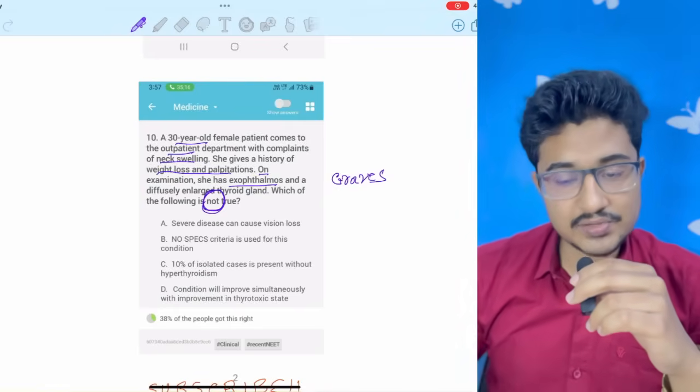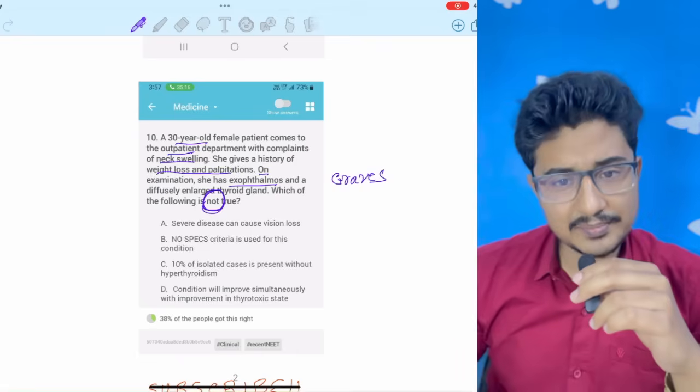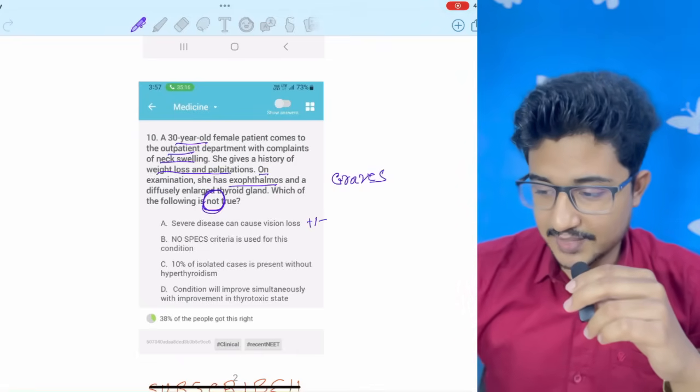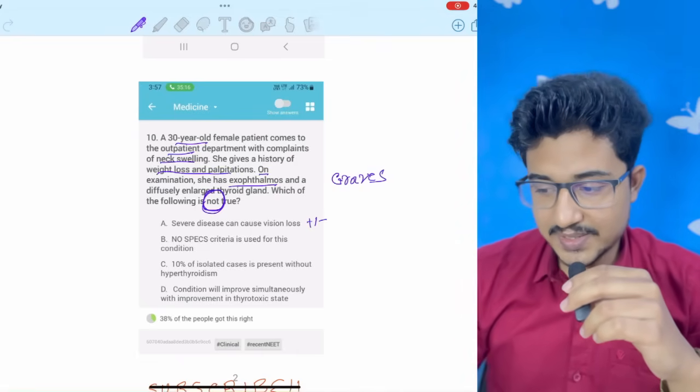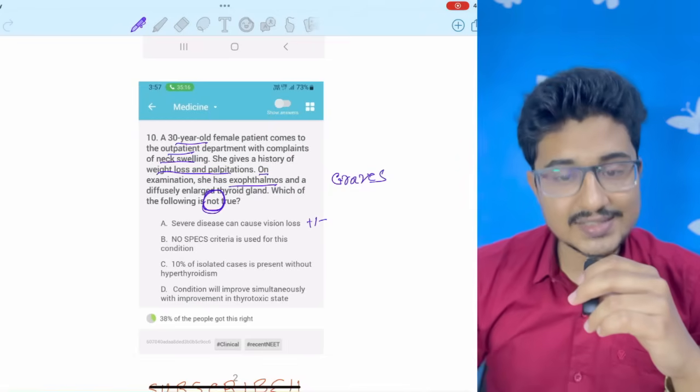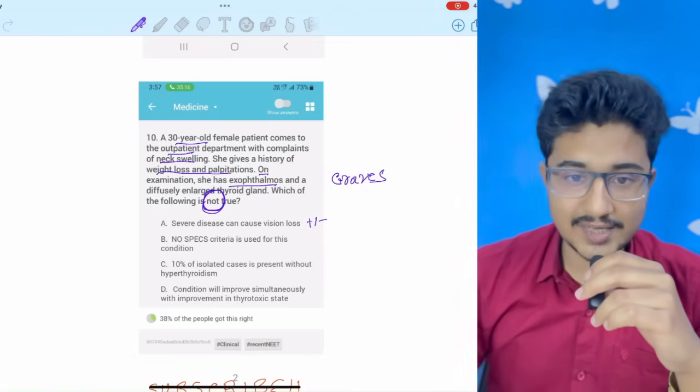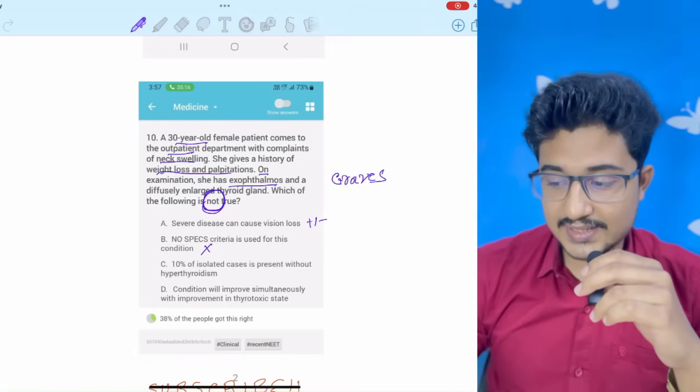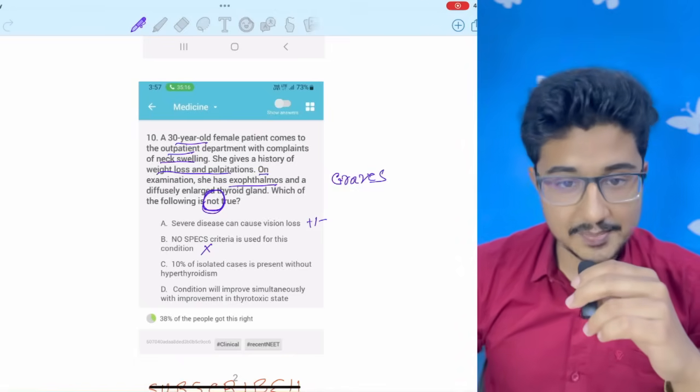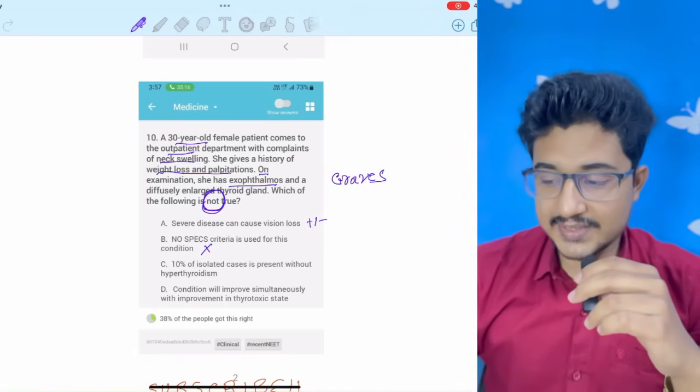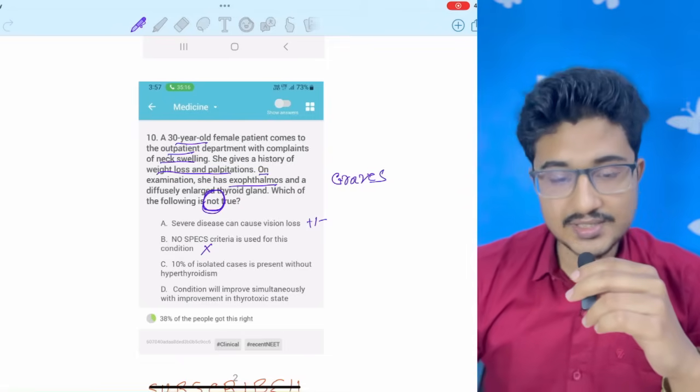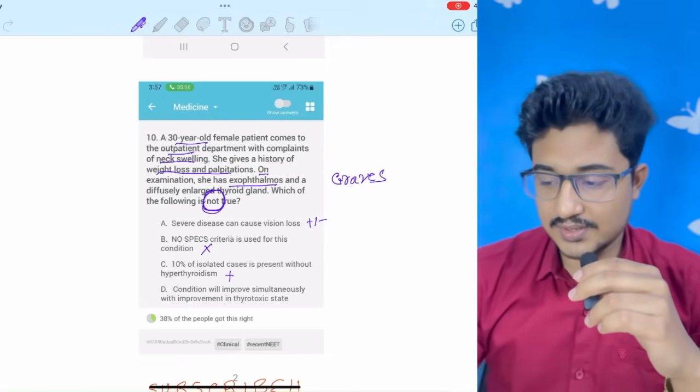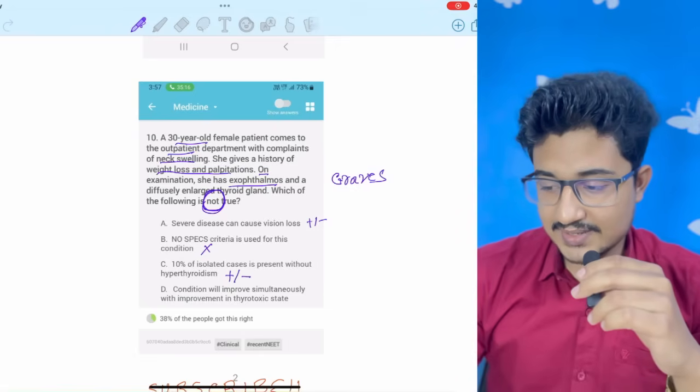Severe disease can cause vision loss. Not sure, but might cause. So, this is plus minus I am giving. NOSPECS criteria is used for this condition. I totally have no idea about NOSPECS criteria. 10% of the isolated cases is present without hyperthyroidism. I don't know the percentage. But yes, without hyperthyroidism also Graves' disease can occur. So, I am keeping it in plus and minus.